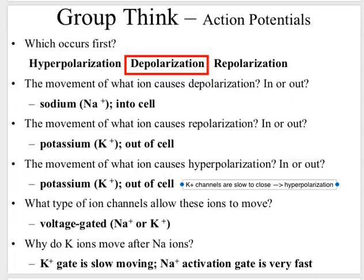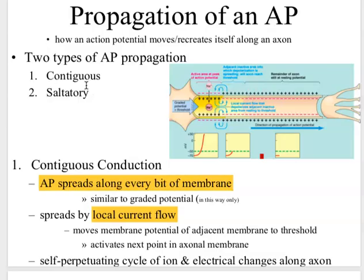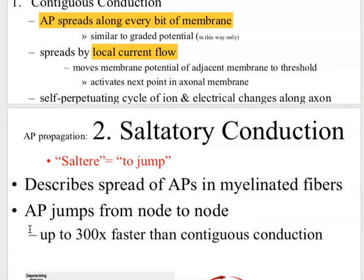The goal of action potentials is to travel along the cell membrane to trigger something else to happen. As they spread across the membrane, we call this propagation, and there are two different ways action potentials can propagate. Contiguous conduction is a bit slower — the action potential spreads along every bit of membrane, touching every single part, spread by local current flow, and slowly moves the whole way.